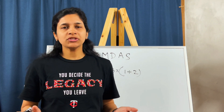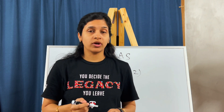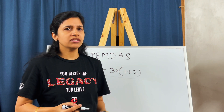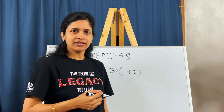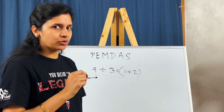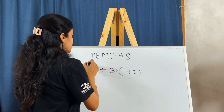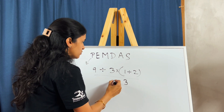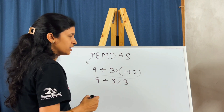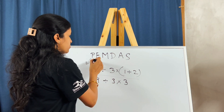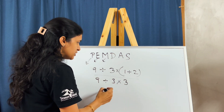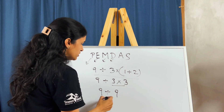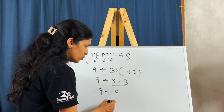Hi everyone. I've seen so many videos going viral saying that these equations, when solved with the PEMDAS rule, give wrong results. Let's check what people are doing. First, it says parentheses, so we solve the brackets: 1 plus 2. Next, exponents — there are none. Then it says multiply, so we solve multiplication, and then divide.